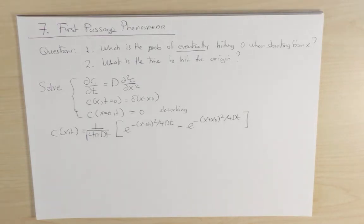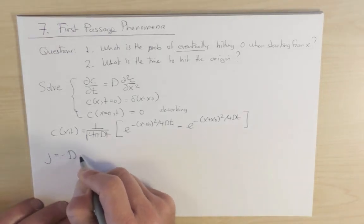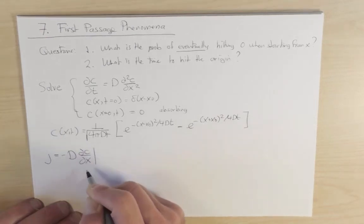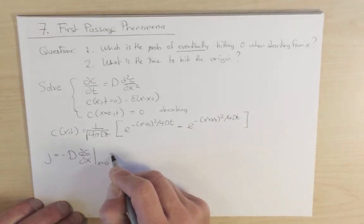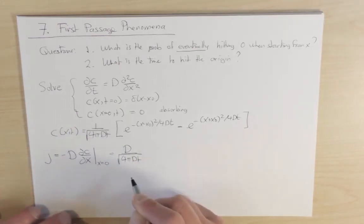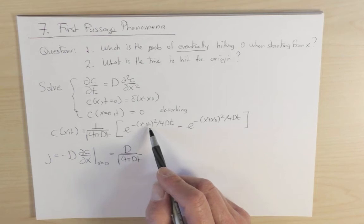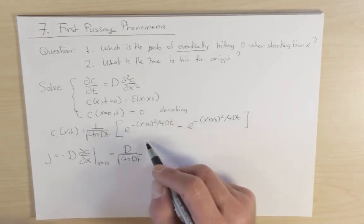And now what I want to compute is the flux of particles that hit the origin, and because of the absorbing boundary condition, whatever hits the origin is then removed, and so the flux at the origin is also the same as the probability that a random walker comes to the origin for the very first time. So this flux j is equal to minus D dc/dx, and we want to evaluate this at x equals zero. And so this is equal to D divided by square root of 4πDt, and now I've got to differentiate with respect to x. So when I differentiate with respect to x, I'll bring down the exponent in the exponential.